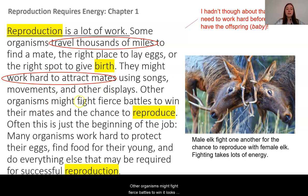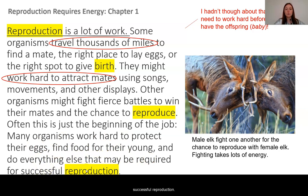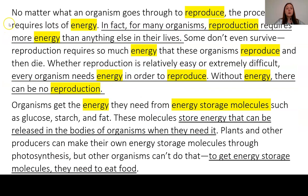I'm circling this because it's a new idea — organisms might need to use energy even before giving birth. They're traveling, laying eggs, and working hard to attract mates. Other organisms fight fierce battles to win the chance to reproduce, like male elk fighting one another. So even before females give birth, reproduction requires a lot of energy from both sides. Often this is just the beginning — many organisms work hard to protect their eggs, find food for their young, and do everything required for successful reproduction.